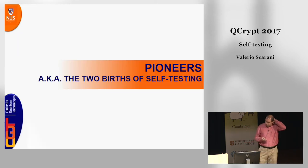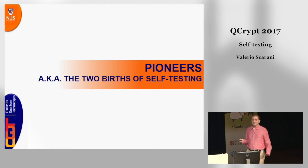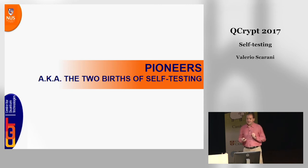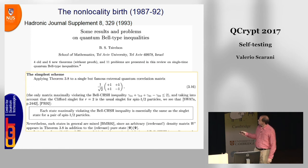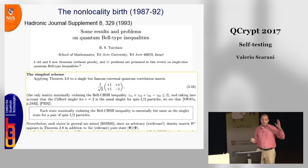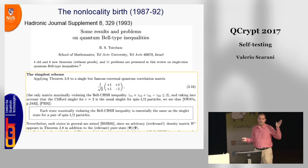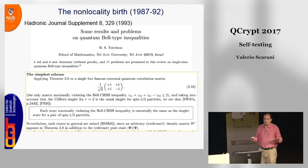Self-testing was born twice, independently. The first birth is in the non-locality setting. Tsirelson, in a 1993 review paper of open problems — presenting four old and six new theorems without proof and eleven problems — stated the simplest scheme. He had already proved this using super-abstract Clifford algebra, but he also gives a concrete example: each state maximally violating the CHSH inequality is essentially the same as a singlet state for a pair of spin-half particles.